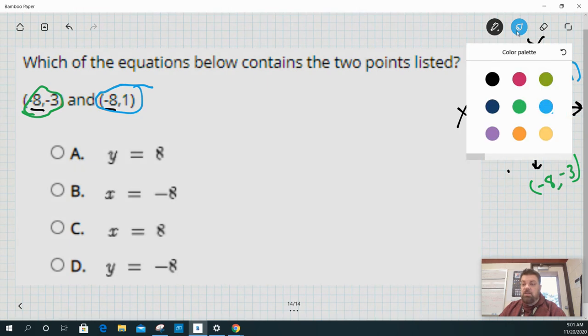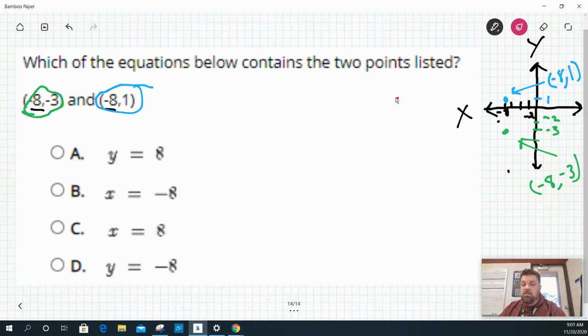And I did change the scale. So now if I draw a line between those two points, I'll get something that looks like this. Now that is a vertical line.